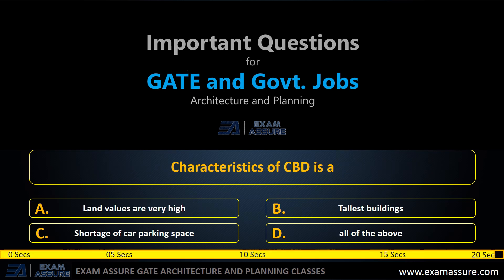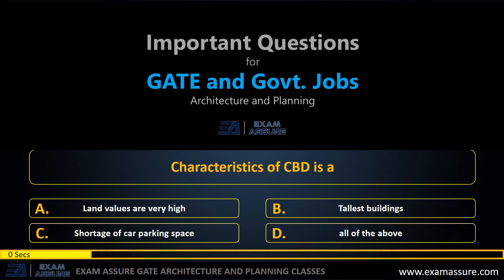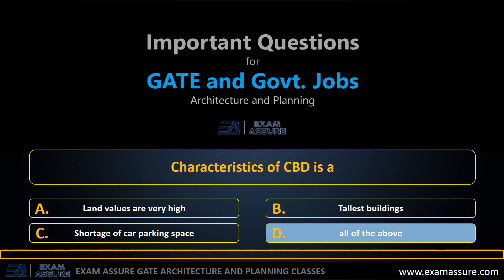Next question. Characteristics of CBD are — Option A: Land values are very high. Option B: Tallest buildings. Option C: Shortage of car parking. Option D: All of the above. The correct answer is: All of the above.